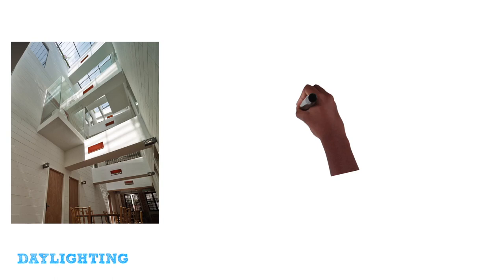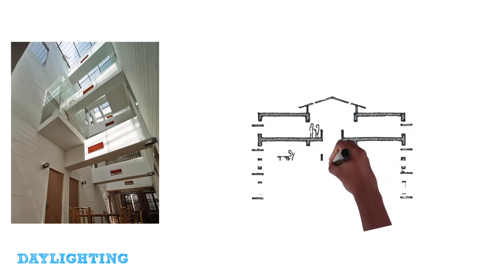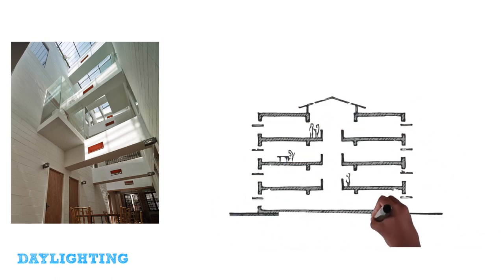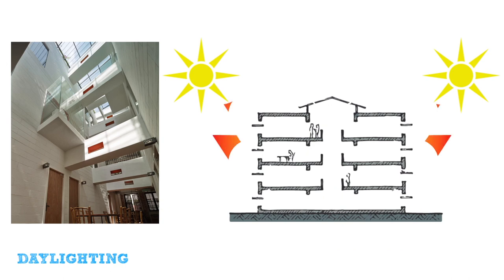Maximize use of natural light. This reduces energy costs and improves overall well-being of building occupants. This can be done by use of clerestory windows and light shelves.